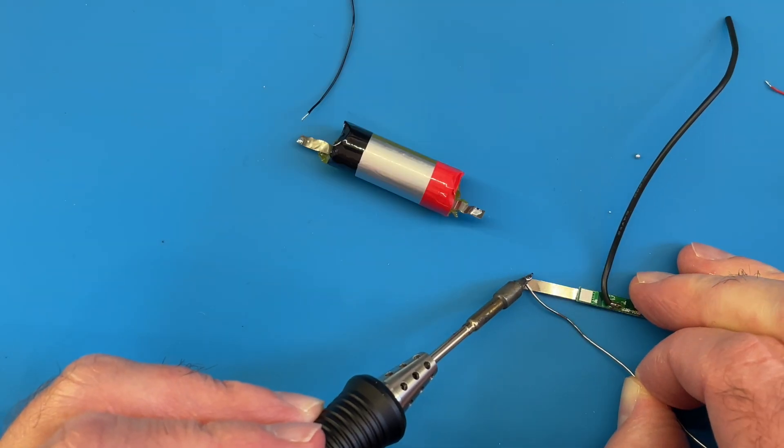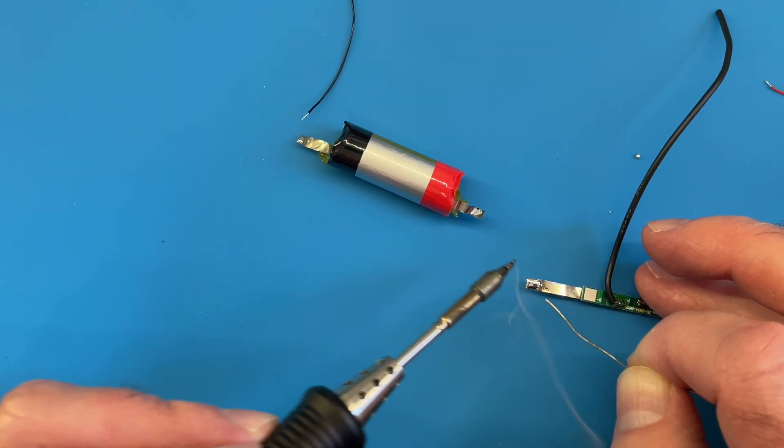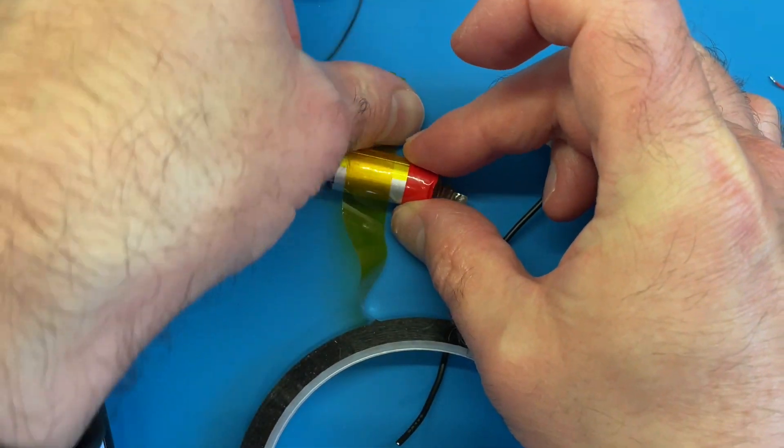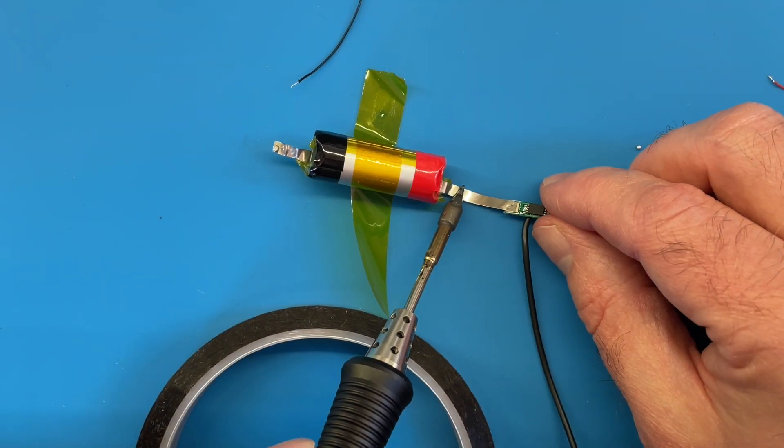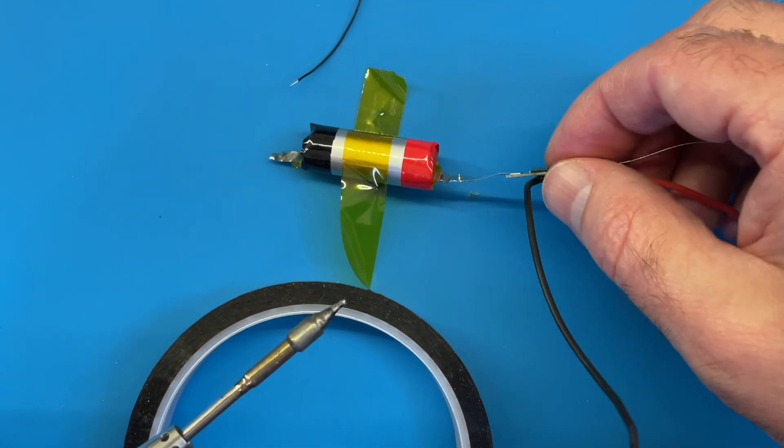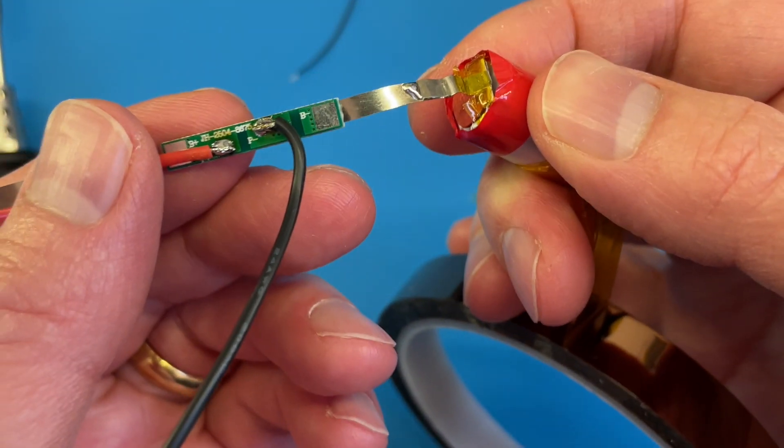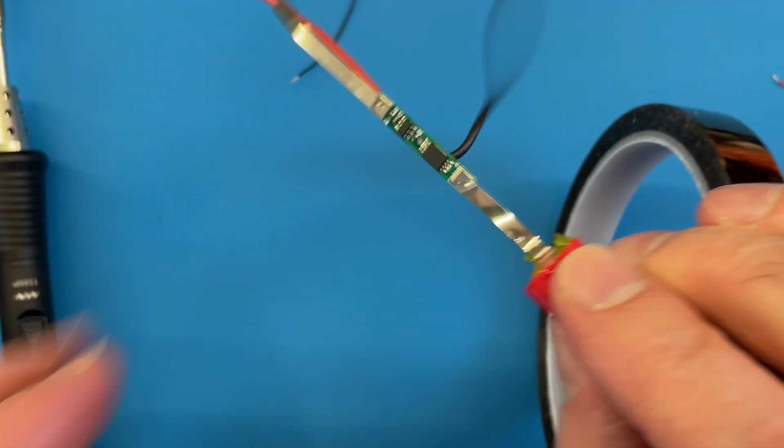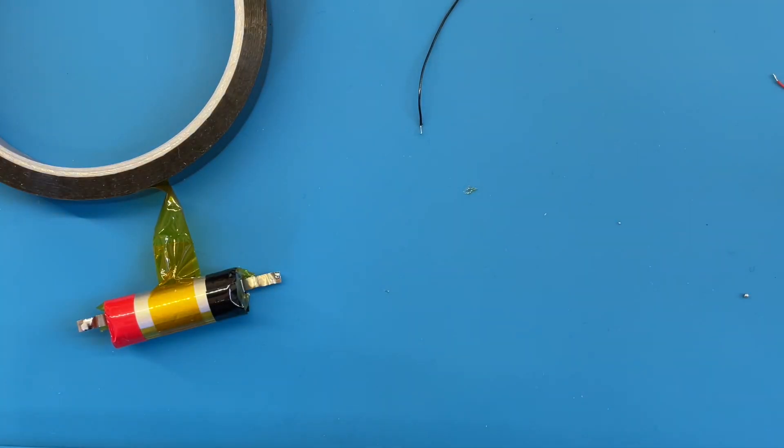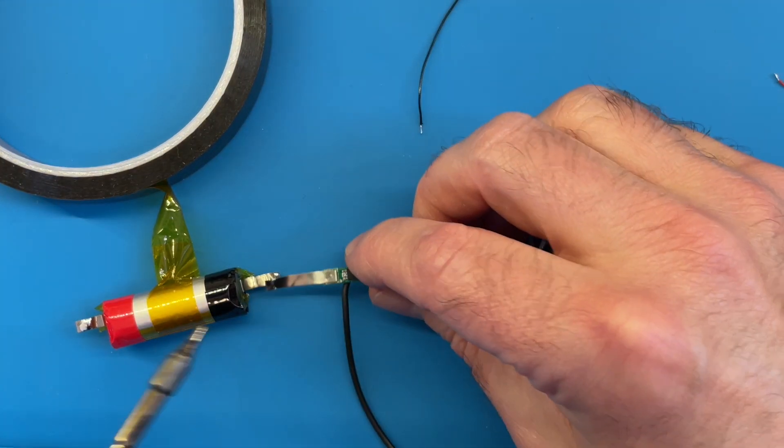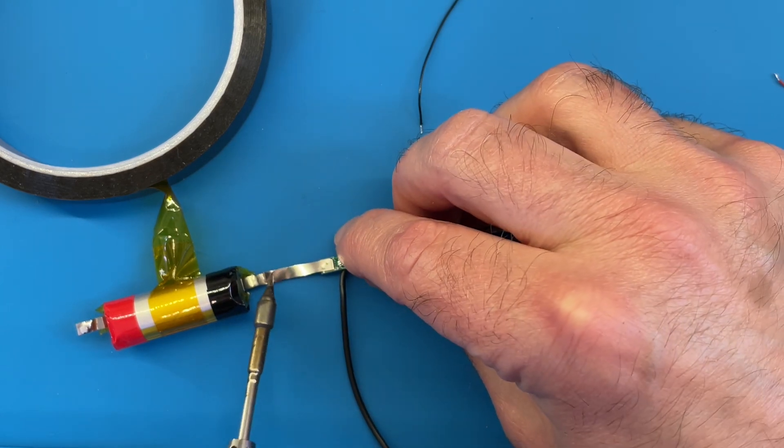So we'll just put a solder onto here. Tape this. It stops wobbling around because that's getting a bit annoying. Okay, that's nicely joined on. Of course we're joined to the wrong end. Let's try that again. So battery minus to battery minus this time.